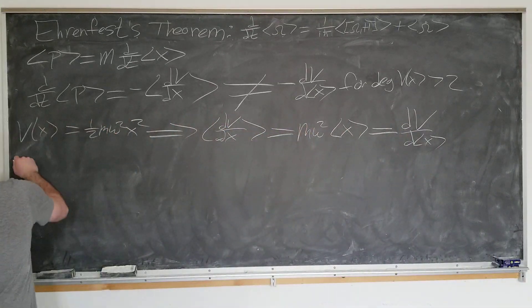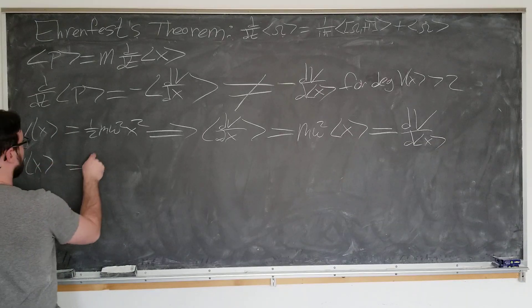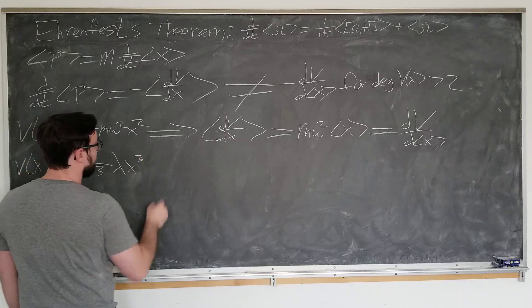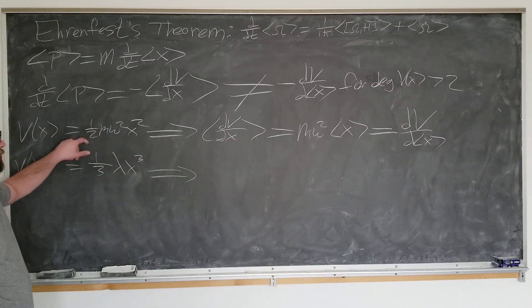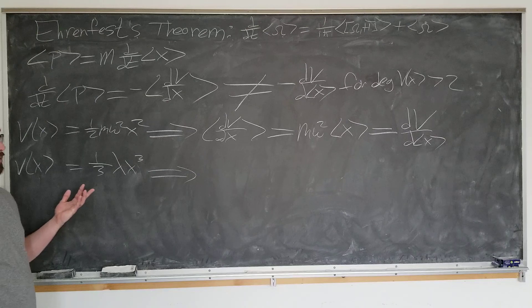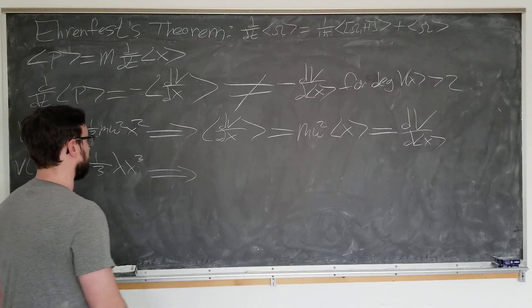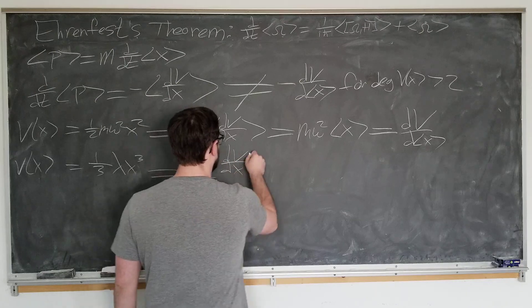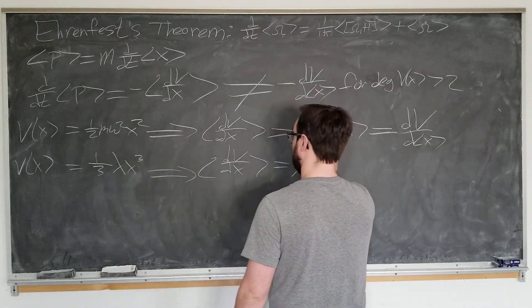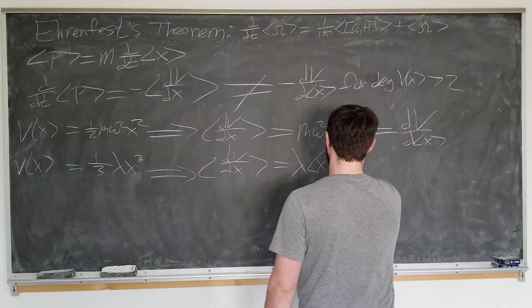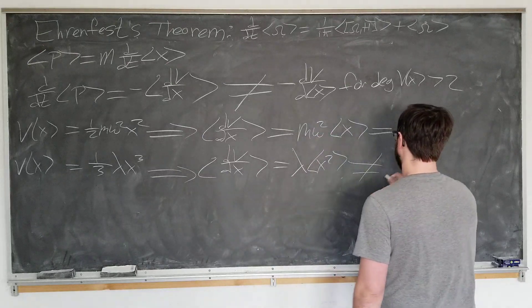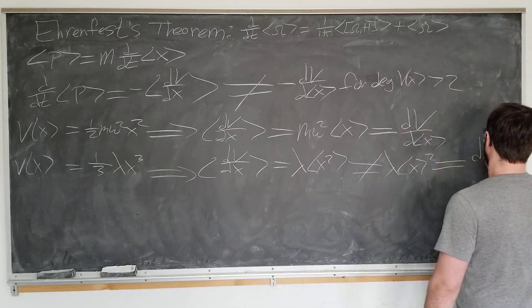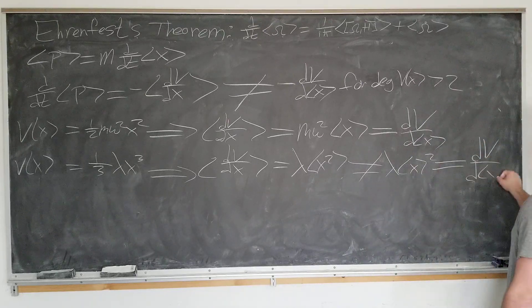But if we go any higher, let's consider v of x one-third lambda x cubed, which actually, if you add these two together, you'll get an anharmonic oscillator, which is useful in quantum field theory. In this case, bracket dv by dx will be equal to lambda bracket of x squared, which is, in general, not equal to lambda bracket of x squared, which is what we would need but we're really going to obey classical laws.